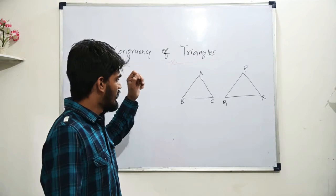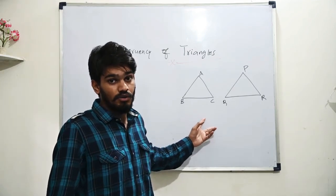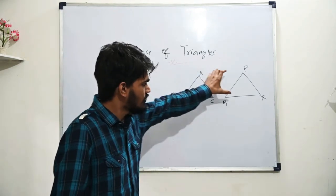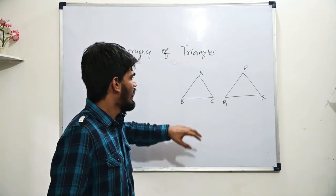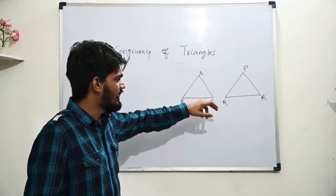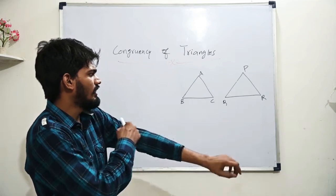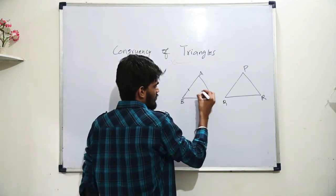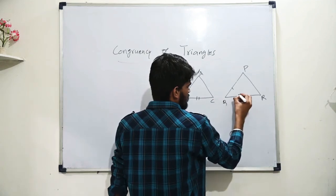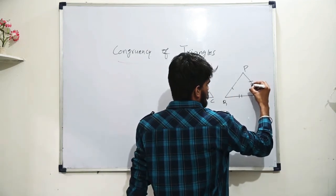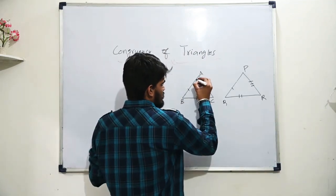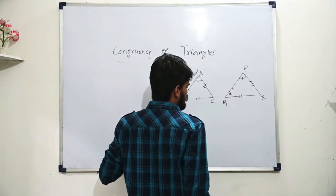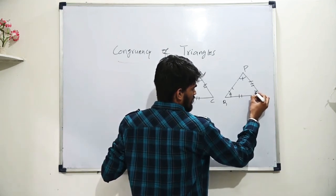When we talk about congruency in triangles, two triangles can be said to be congruent to each other when all three sides of one triangle are equal to all three sides of another triangle each to each, and all three angles of one triangle are equal to all three angles of the other triangle each to each. So here, side AB equals side PQ, side BC equals side QR, side AC equals side PR, angle A equals angle P, angle B equals angle Q, and angle C equals angle R.